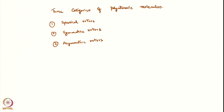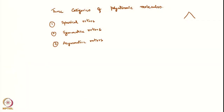One analogy I can give between spherical, symmetric, and asymmetric rotors is like triangles. Think of a triangle with three sides A, B, C, and correspondingly three rotation axes. For an equilateral triangle, A, B, and C are all the same. Analogically, a spherical rotor is like an equilateral triangle.